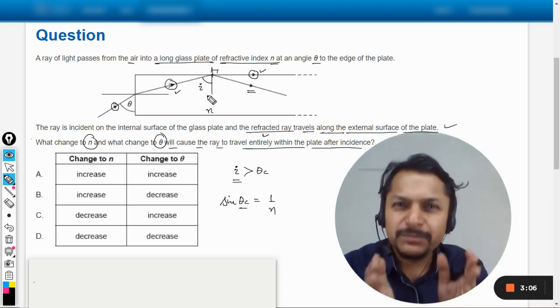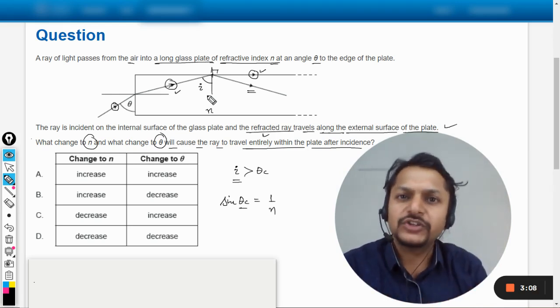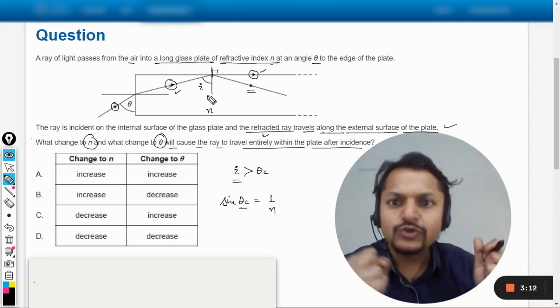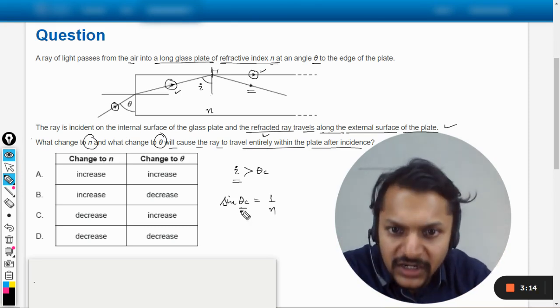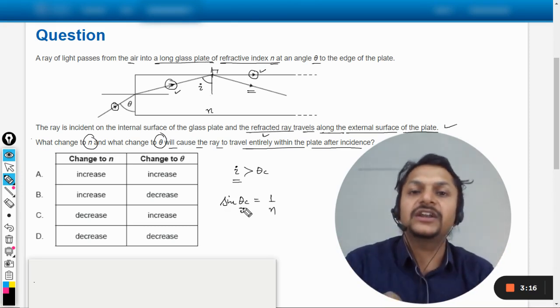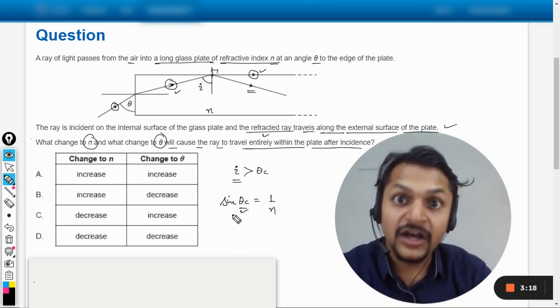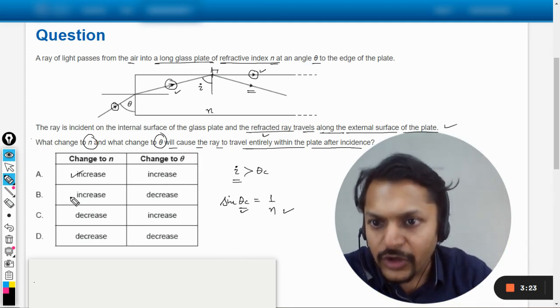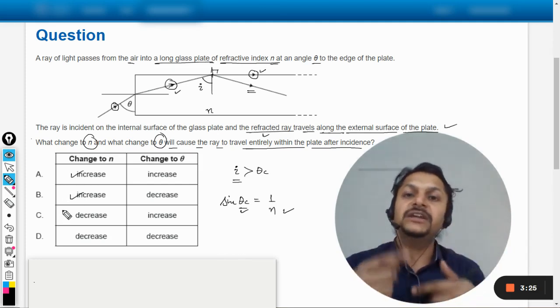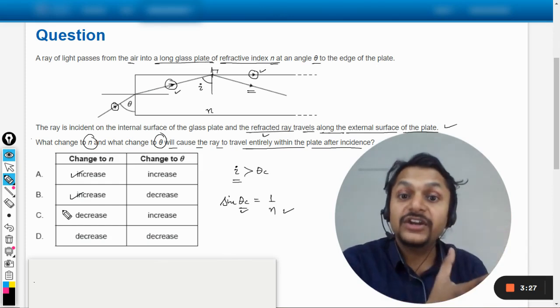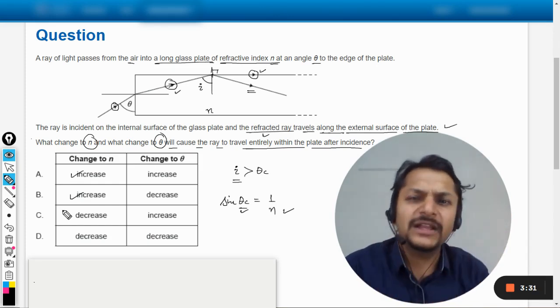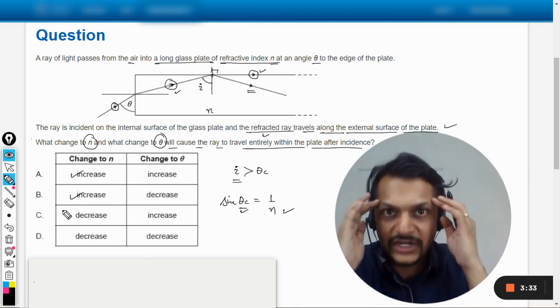Number one, the theta critical should have as minimum possible value as much as possible, isn't it? So we have to reduce the theta critical value. So theta critical is given by this, so reducing theta critical means reducing sine theta, and reducing sine theta means increasing the refractive index. So first of all, if the refractive index of the medium is increased, the theta critical reduces even further.